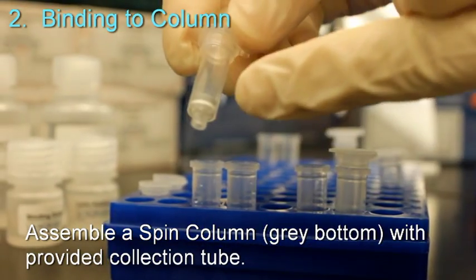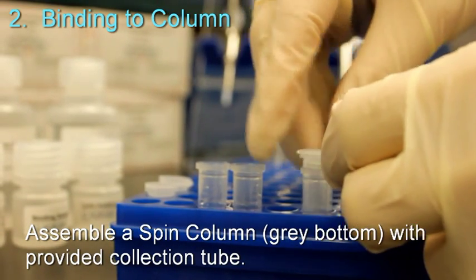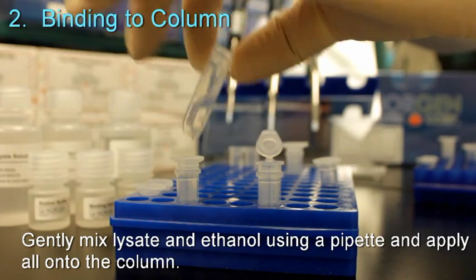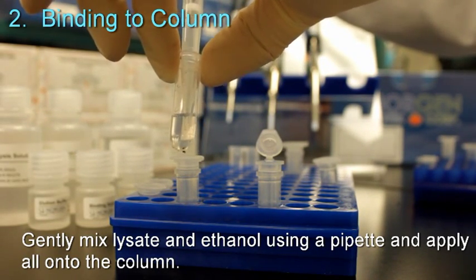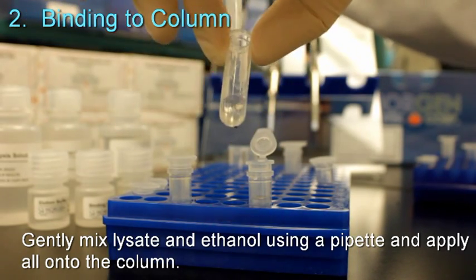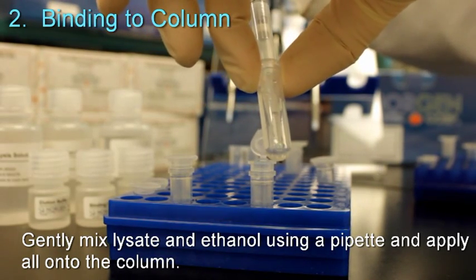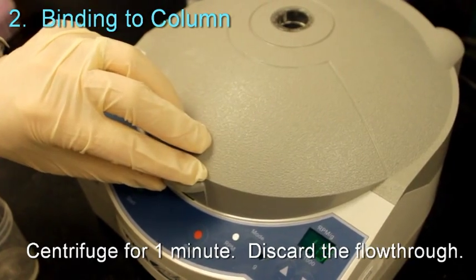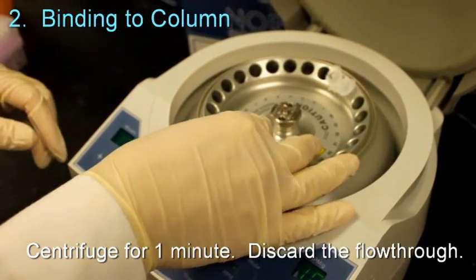Assemble a spin column with a grey bottom with the provided collection tube. Gently mix the lysate and ethanol using a pipette and apply all onto the column. Centrifuge for 1 minute and discard the flow-through.